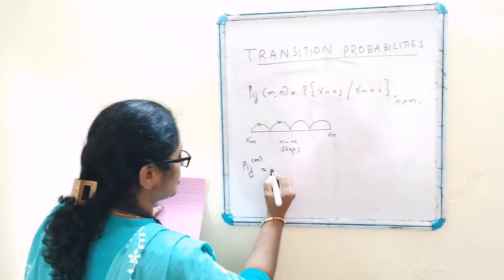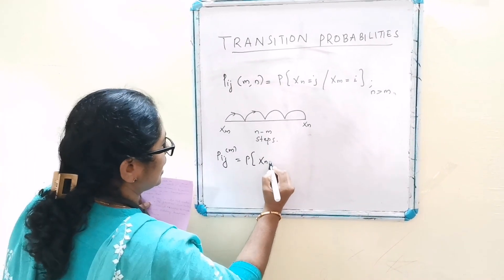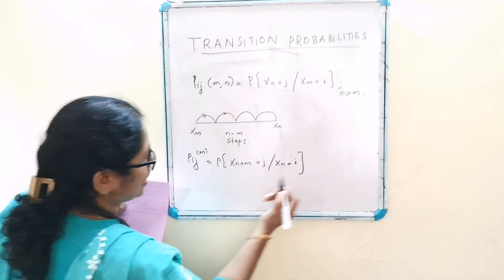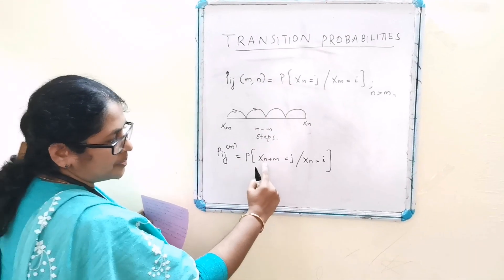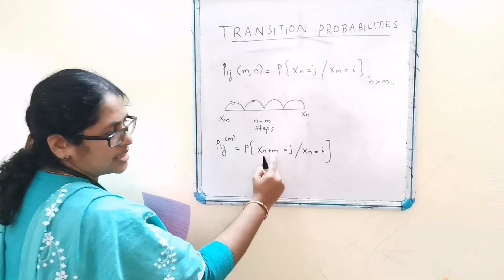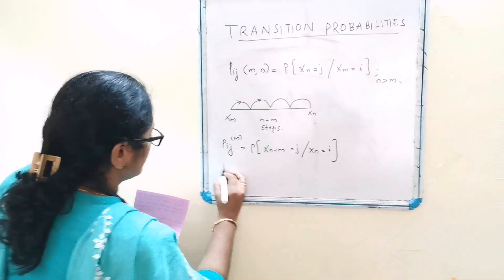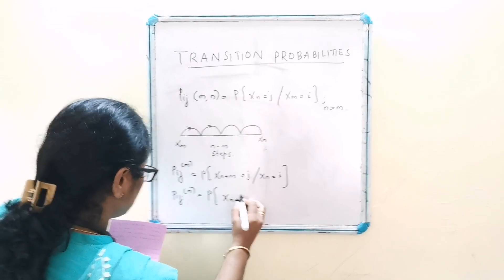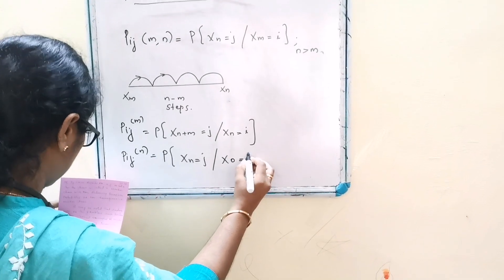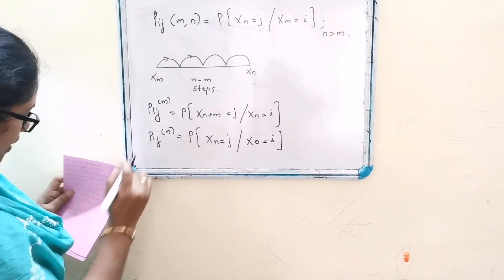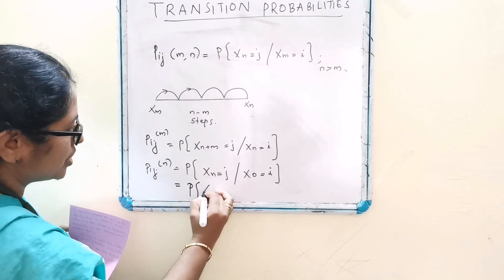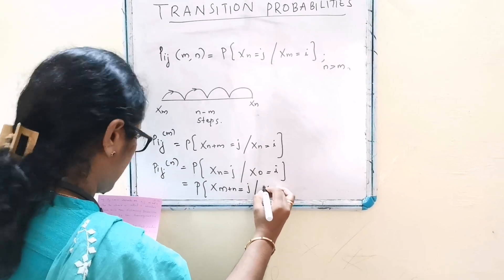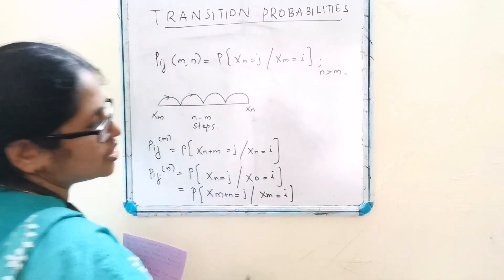pij(m,n) is equal to probability of Xn+m equals j given Xn equals i. That is, we have m step, where the difference is m. And also pij(m,n) is equal to probability of Xn equals j given X0 equals i. Here also the difference is n, and so on.